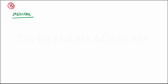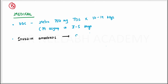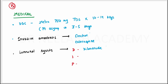Treatment. For medical treatment, the drug of choice is metronidazole 750 mg TDS for 10 to 14 days. Usually the symptoms resolve in 3 to 5 days. For invasive amoebiasis, emetine and chloroquine are generally used. There are also luminal agents, remembered by the mnemonic DIP: Diloxanide, Iodoquinolone, and Paromomycin. However, these do not have any systemic activity.